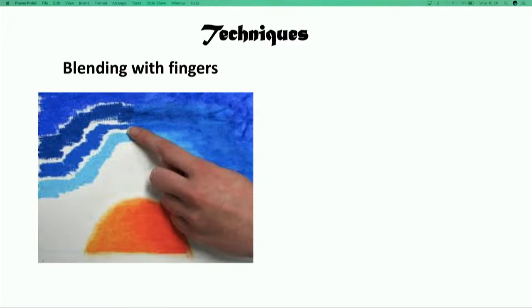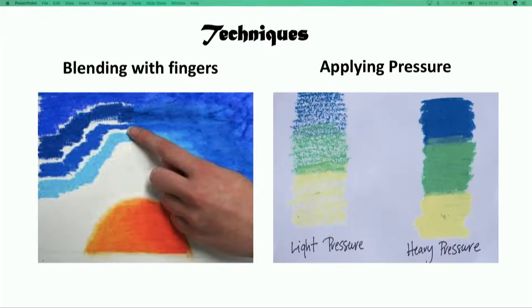Let us explore some oil pastel techniques. The beauty of oil pastels is in its ability to blend, which can be achieved through heavy pressure blending and light pressure blending. With heavy pressure blending, you simply add your color onto your paper followed by adding layers of different colors on top.